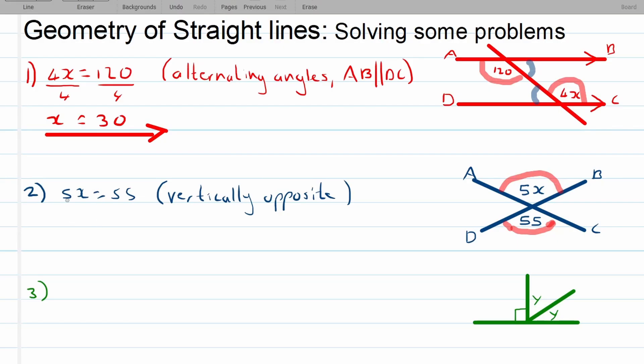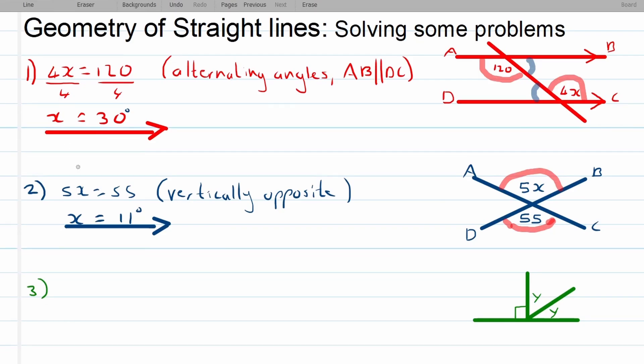And over here there's no parallel lines having a factor over here. So we're not going to state that. So 5x divided by 5 is equal to x. And 55 divided by 5 is equal to 11 degrees. And that's our final answer for number two. Let's look at number three.